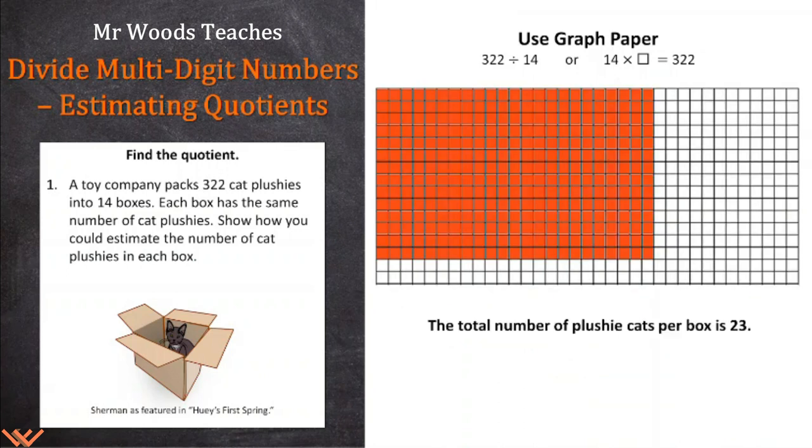So as you can see, I cleaned this up a bit. So I have all of this already shaded in. There's all of my, if I wanted to go through and count them individually, I could. But here's the answer. There's a total number of plushy cats per box is. And again, there's that is instead of between or about. It is 23.